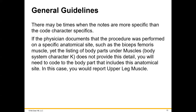The fourth character gives you more definitive information. For example, if a physician documents that a procedure was performed at a specific site such as the biceps femoris muscle, yet the body listing under the muscles, body system K, does not provide that level of detail, you'll have to code to the body part that includes this — in this case, the upper leg muscles. This is where your anatomy and physiology comes in with ICD-10-PCS.